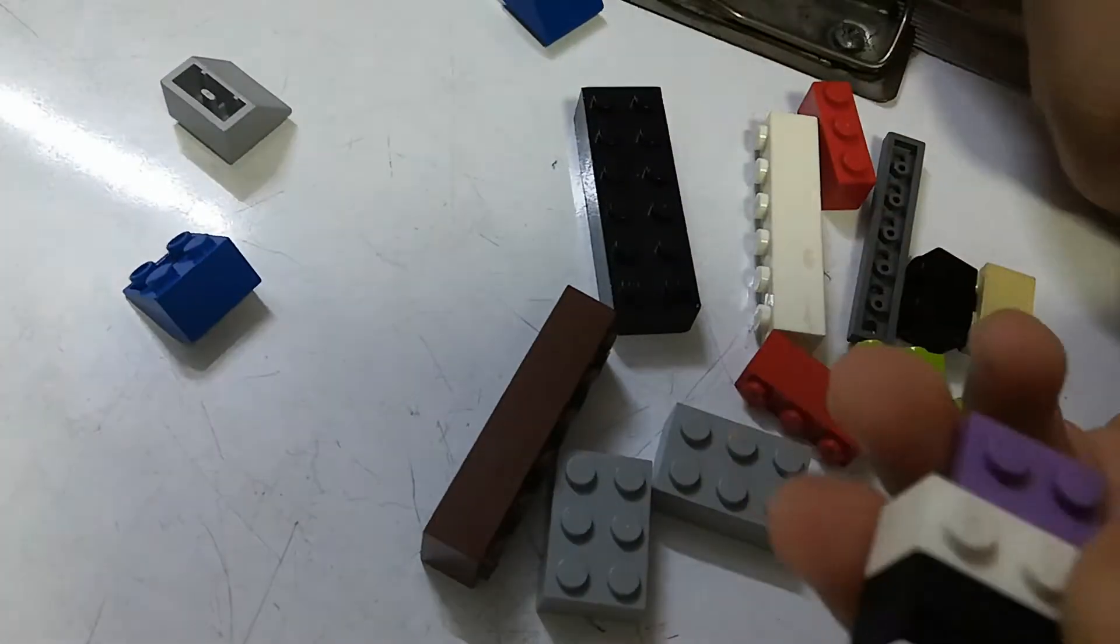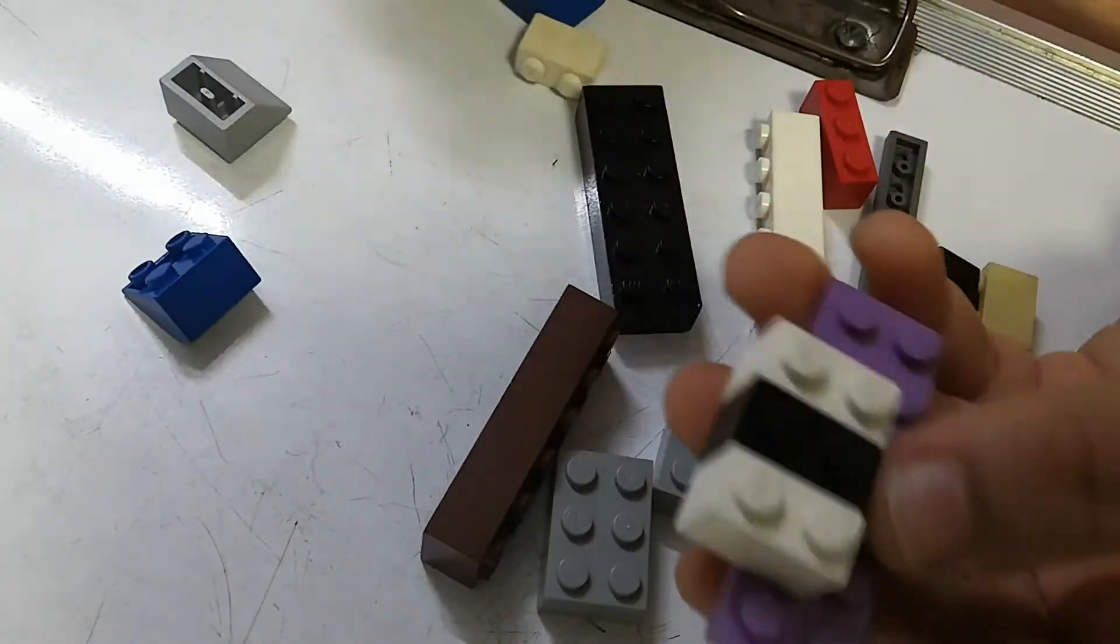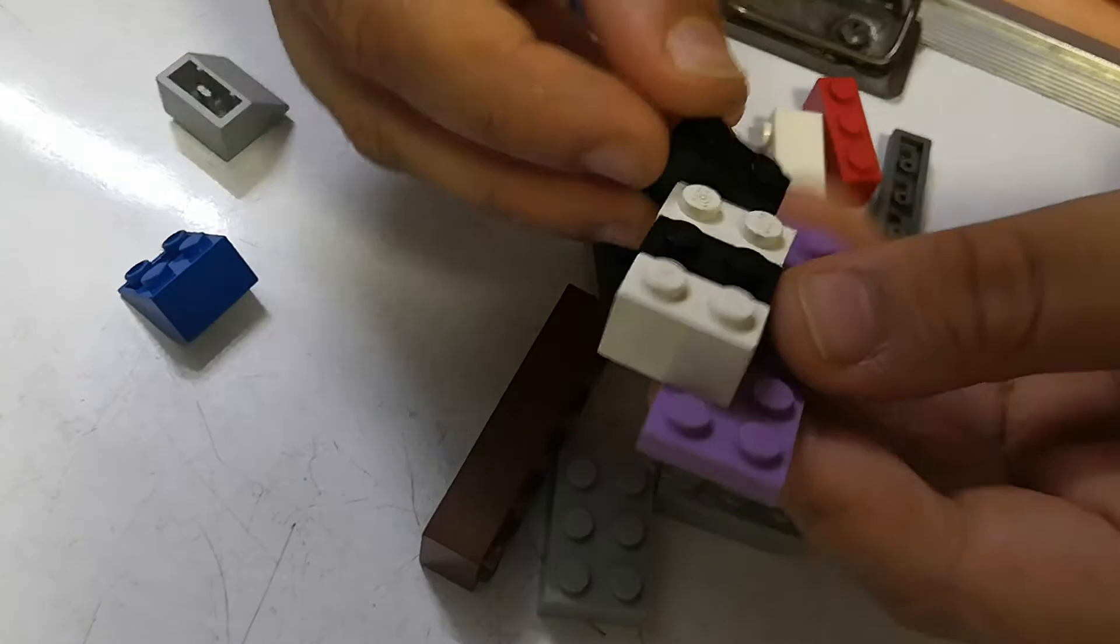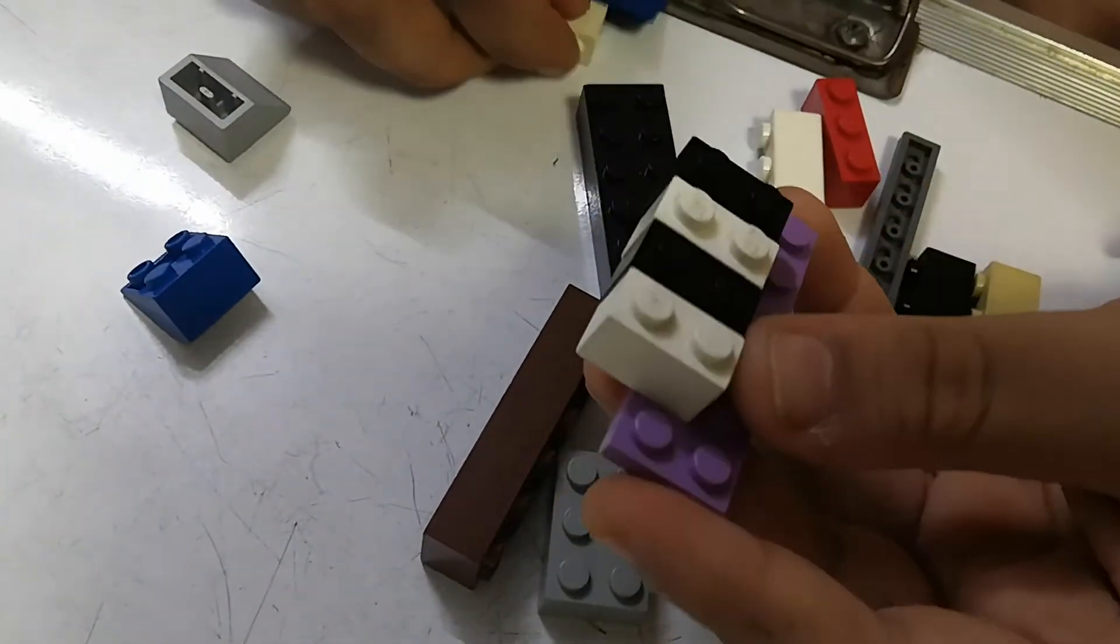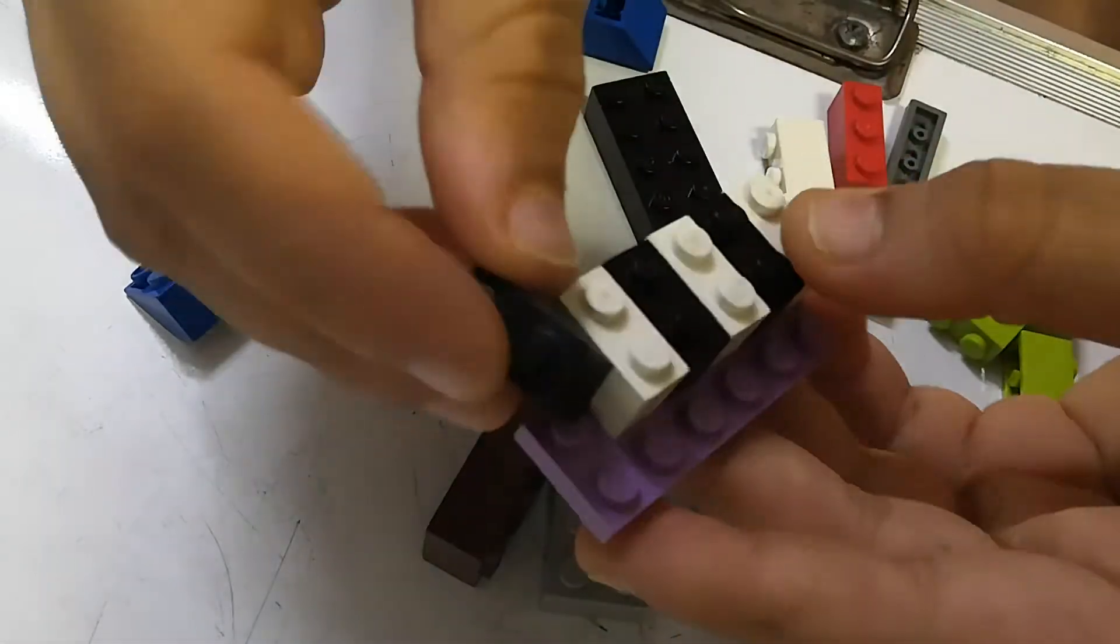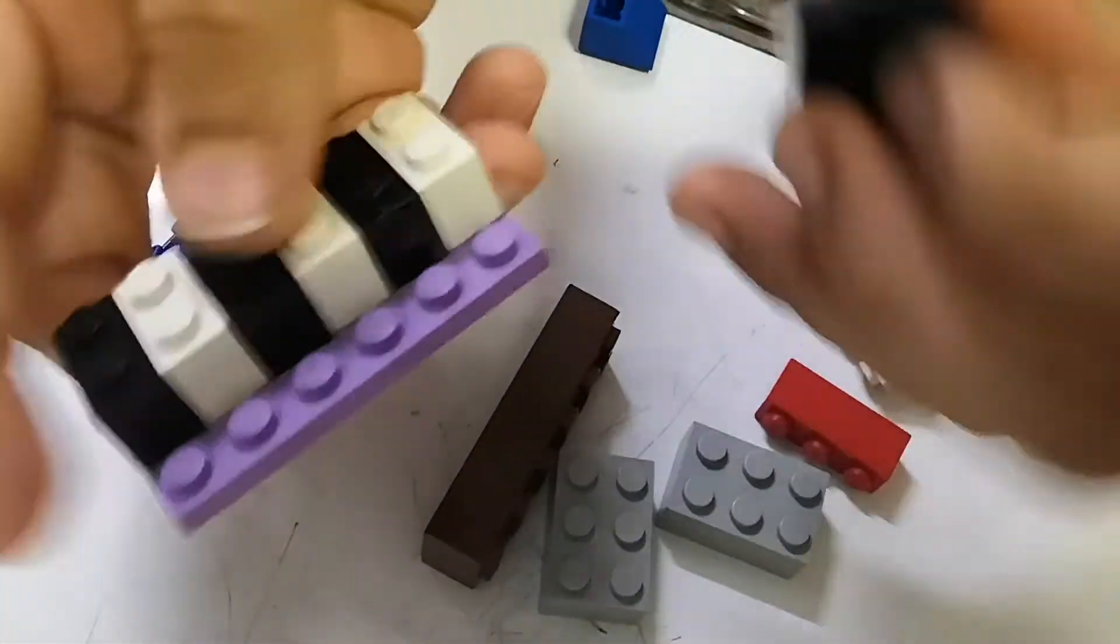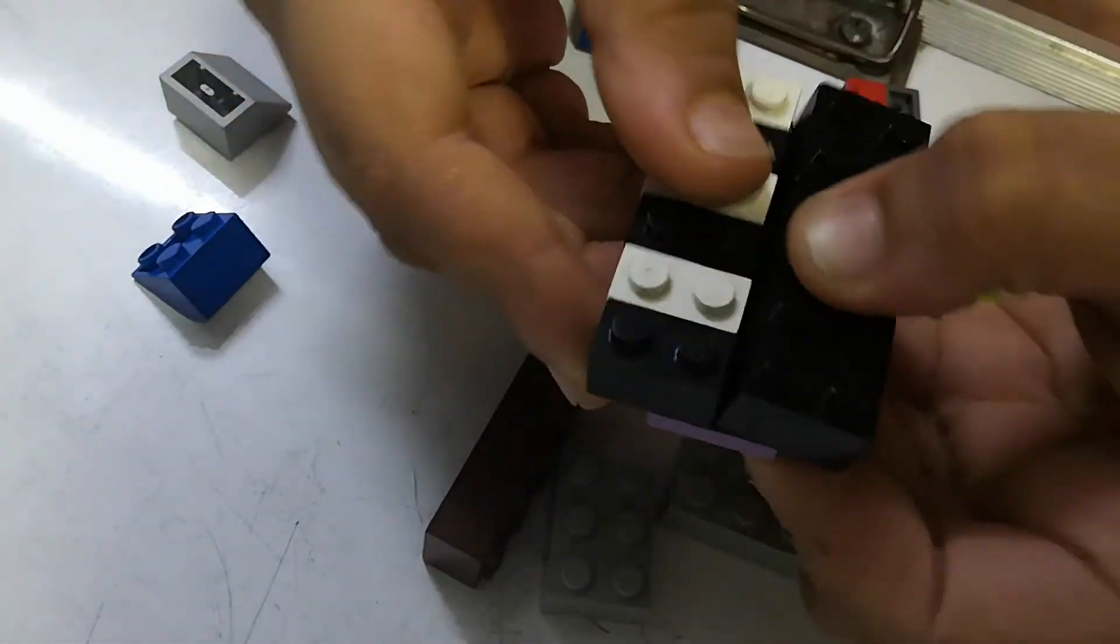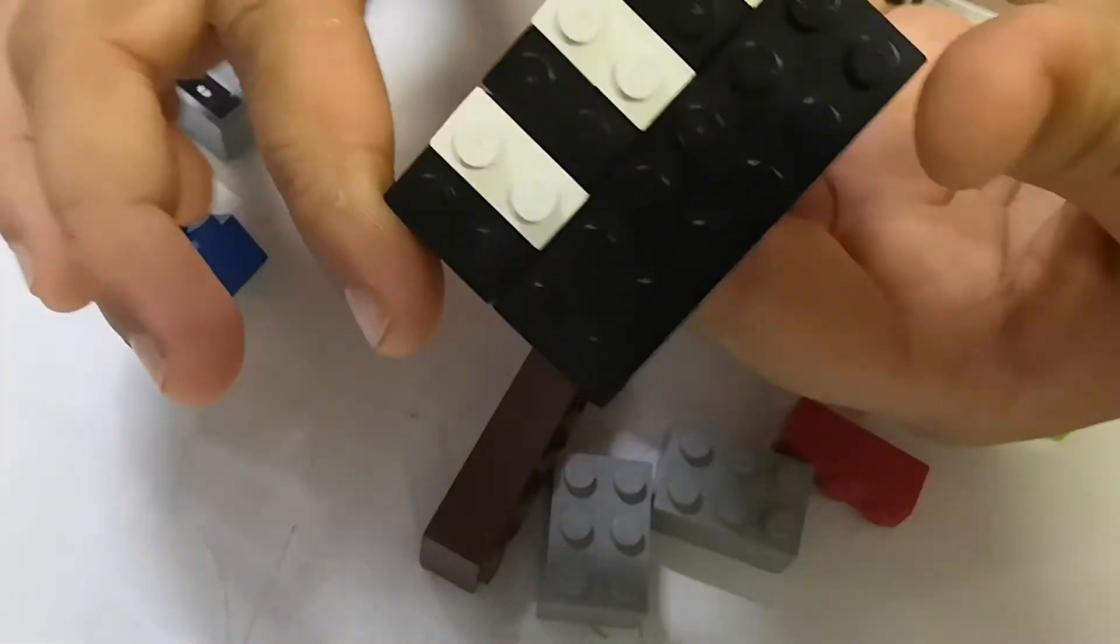One black, okay one more black, and then one more white. Put this white here, this black here. This black piece we have to put it here. So this is the base of the piano.